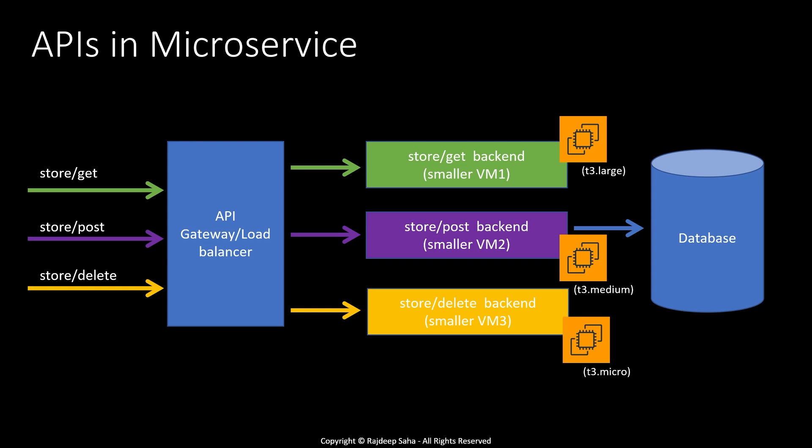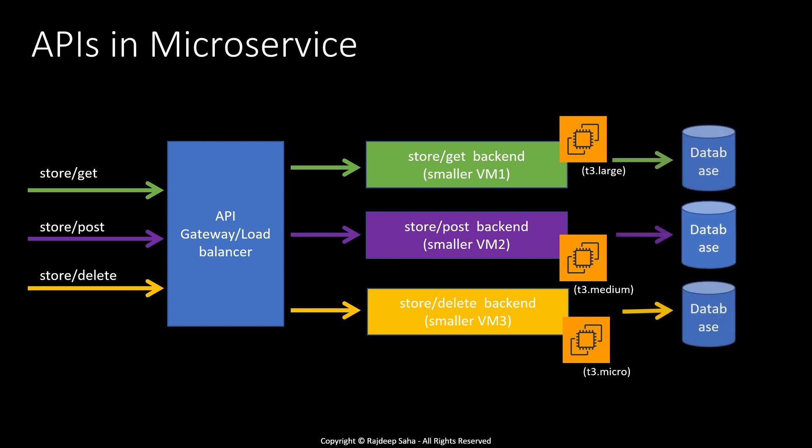Now you might say each microservice should have its own separate database. Ideally, yes — but in real-world scenarios, it is not always possible to break a large database into multiple smaller ones. We will talk about the characteristics of microservices, but remember it is not an all-or-nothing approach. In real-world enterprise projects, you fulfill the characteristics of microservices that make your business agile and your life easier — but it does not need to check every box.